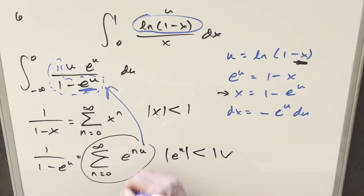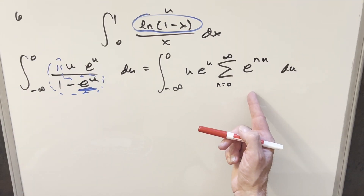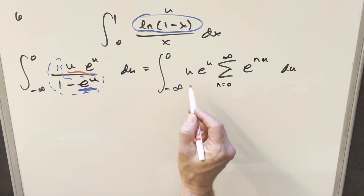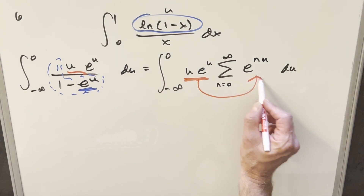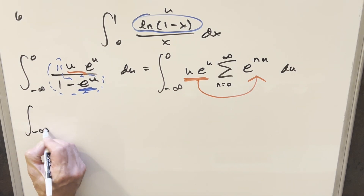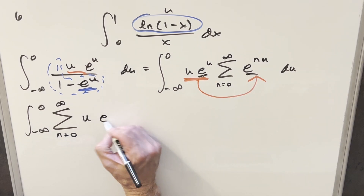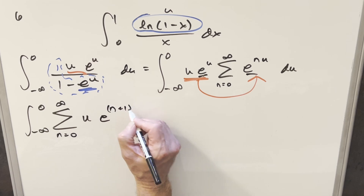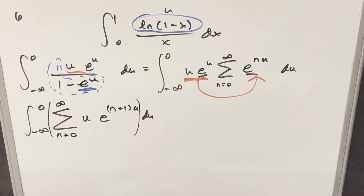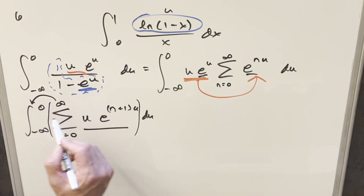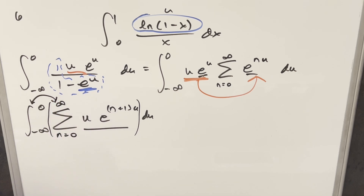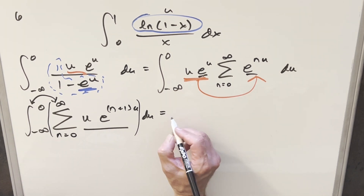Plugging this back into the integral, we now have the series representation. We distribute the u inside the sum. Since u and e to the u share the same base, we combine them and write e to the (n plus 1) times u du. Now we need to swap the sum with the integral — this will be justified later when we confirm the series is absolutely convergent. For now, we'll make the swap.